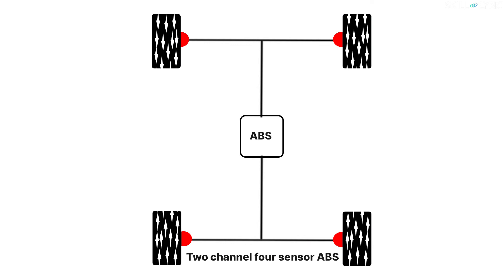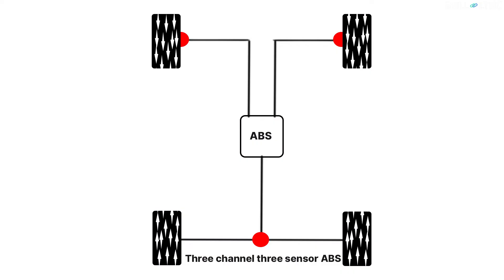In the 2 channel 4 sensor ABS, a sensor will be located on each wheel and a valve is used to control each axle. Though all the wheels are equipped with a sensor, individual braking of wheels is not possible here. This ABS is usually found in passenger cars of the mid-1980s. In the 3 channel 3 sensor ABS, each front wheel has a sensor on it and a valve to control them. Another sensor and valve are used for controlling the rear axle. Since the front wheels can be controlled individually, maximum brake force can be achieved. However, a single channel for controlling the rear wheels reduces the braking effectiveness. It can be found in pickup trucks equipped with 4 wheel ABS.